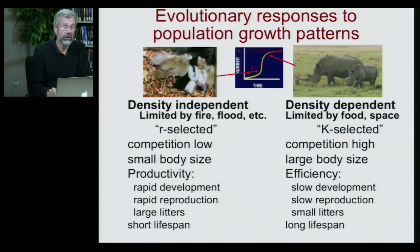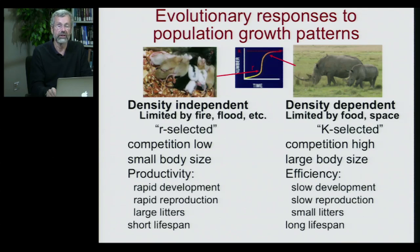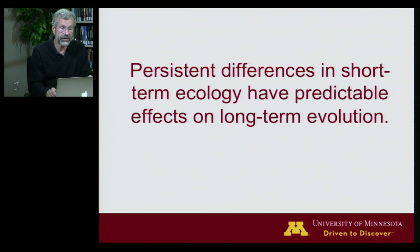Where you have a high rate of reproduction and a high-energy lifestyle, you have a very short lifespan. With K-selected species, individuals live a very, very long time. We're going to have a whole lecture devoted to the evolutionary responses of this mortality versus reproduction trade-off next week, so this topic will be continued. For now, all I wanted to get across is that any persistent differences in short-term ecology have predictable effects on long-term evolution.